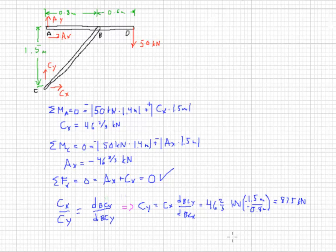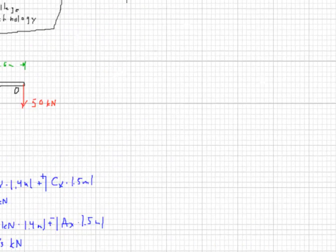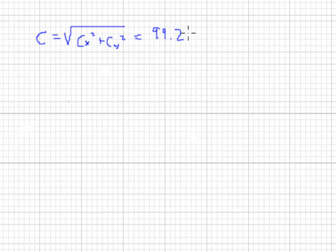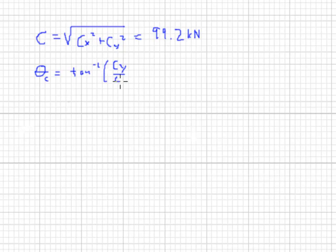The problem asks for simply the total force at joint C. The total force is CX squared plus CY squared, take the square root, and we get 99.2 kilonewtons. If we want the angle, we take the inverse tangent of CY over CX, and we get 61.9 degrees.